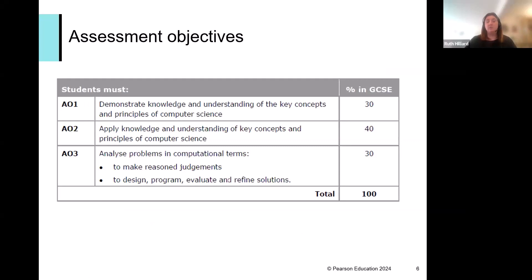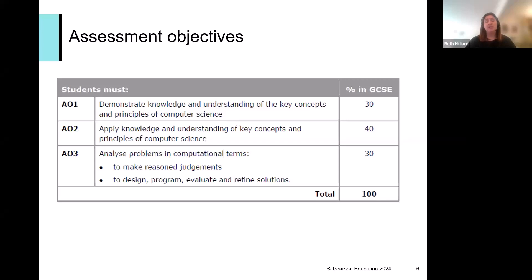You can find a breakdown of all three assessment objectives — AO1, AO2, and AO3 — on page 18 of the specification. AO1 covers basic recall and simple understanding of key points. AO2 then steps it up, expecting students to apply what they know, give answers in context, and apply understanding to particular scenarios or examples they're given. AO3 is the most challenging, covering real analysis, synthesis, and evaluation of the program context — and a lot of the time AO3 is in the programming paper, as you can tell from the descriptor.